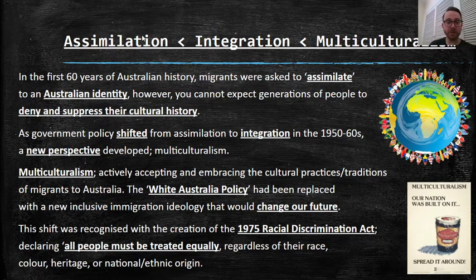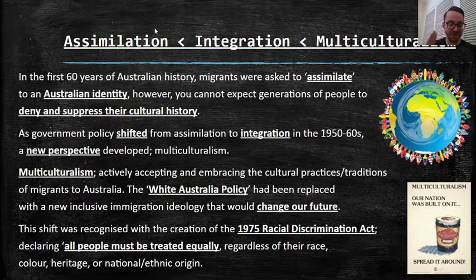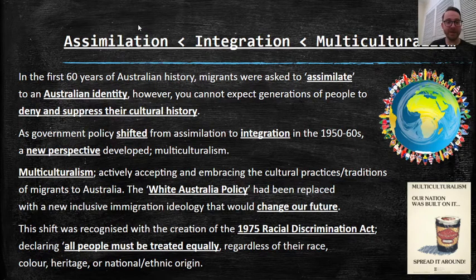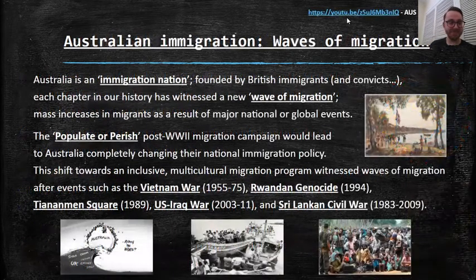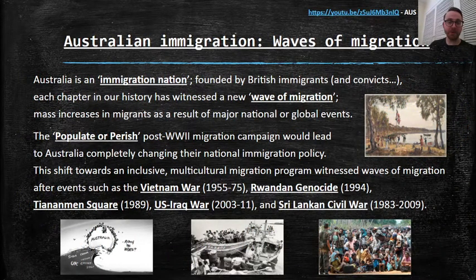I quite like this little timeline. If you're trying to remember Australian immigration policy in three words, think: assimilation, then integration, then multiculturalism. That's a three-word summary of the unit we've covered over the past couple of weeks — Australian immigration, waves of migration.